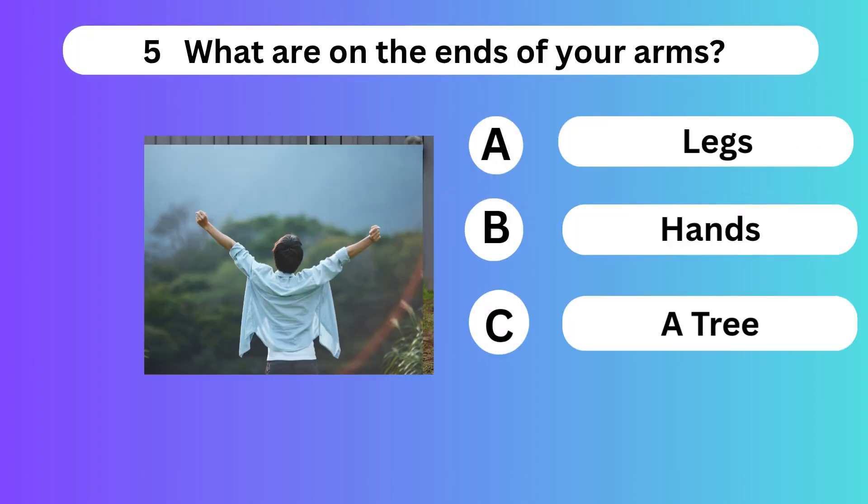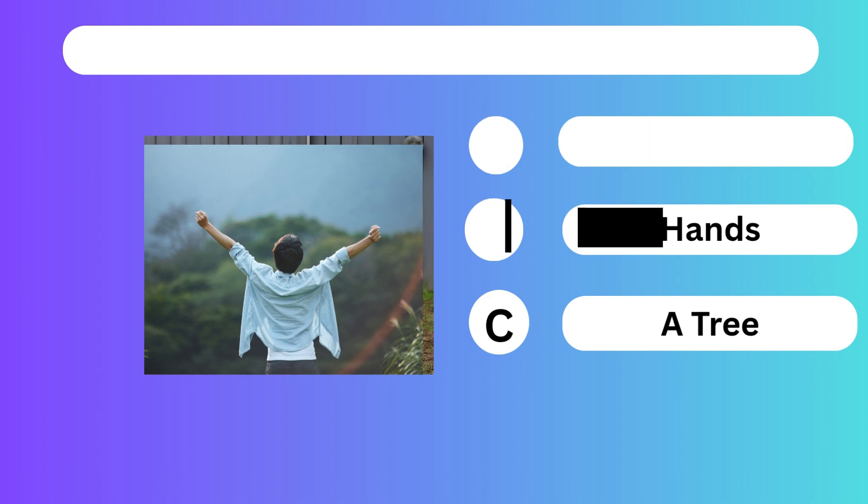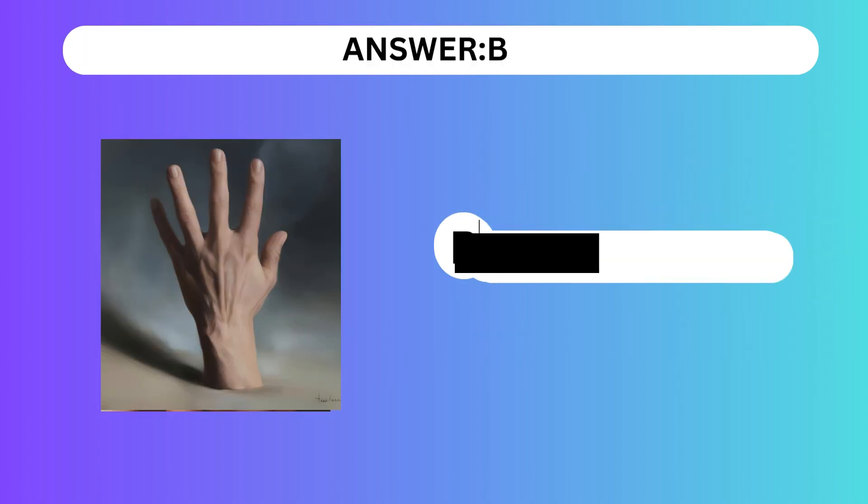Question 5. What are on the ends of your arms? Answer is B. Hands.